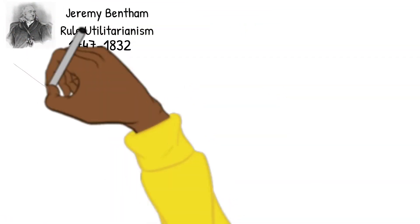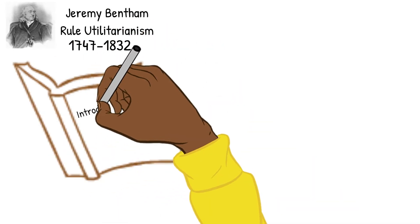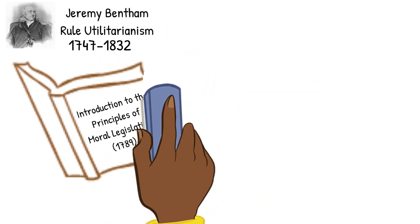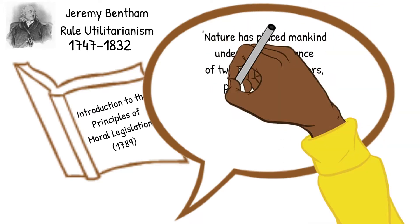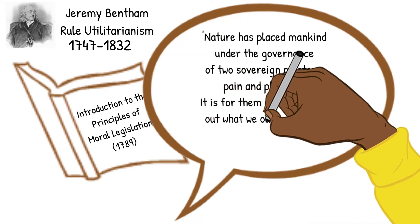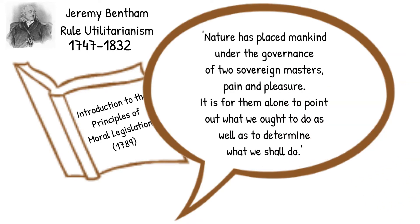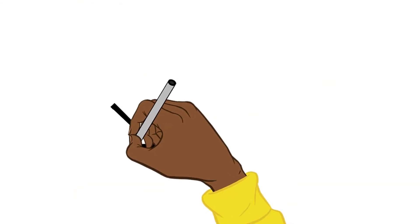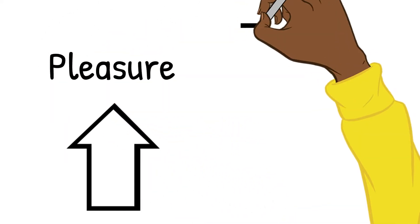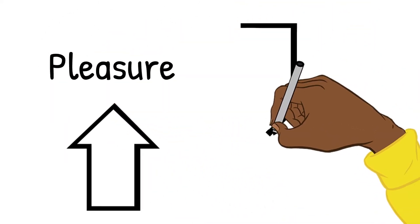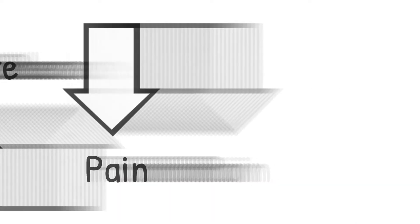So let's begin with Bentham. In his 1789 publication of the introduction to the principles of moral legislation, he wrote that human life was dictated by the sovereign masters of pleasure and pain. Thus, according to Bentham, when thinking of solutions to a moral problem, we must pick the path that maximizes pleasure but minimizes pain. Therefore, his approach is quantitative.